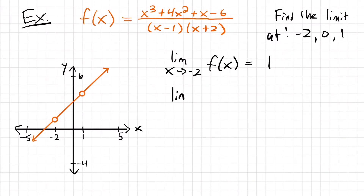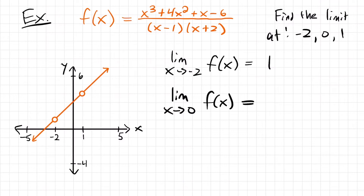How about the limit as x approaches 0 for the function? We'll follow our function until we get to x equals 0, and that lines up with y equals 3. And if we start from the left side, we also follow our function until we get to x equals 0, and we find ourselves at y equals 3 again. Both sides agree, so we can say that the limit is also 3 from both sides.